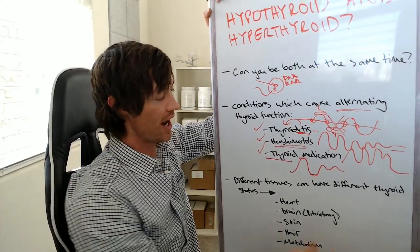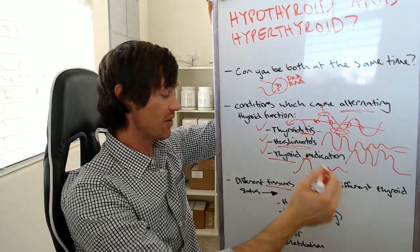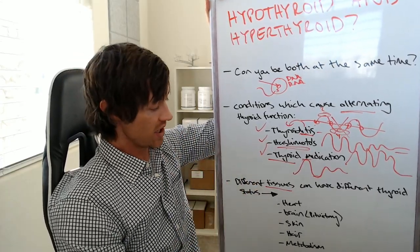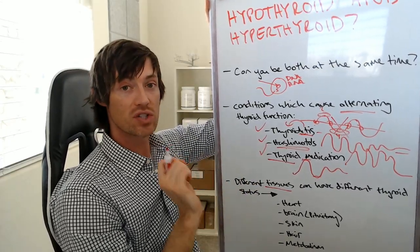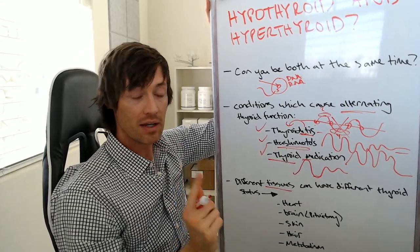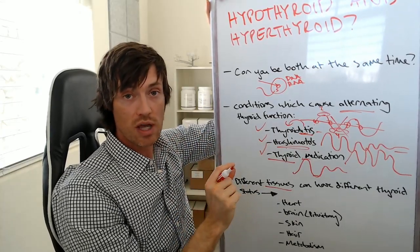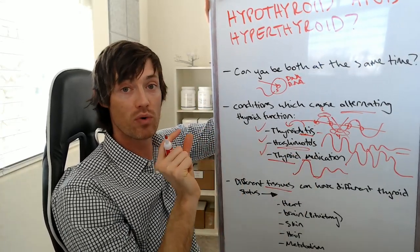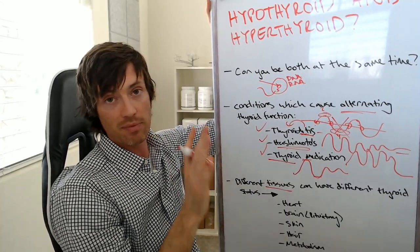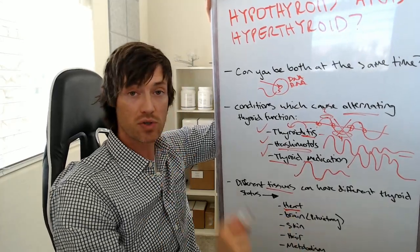That could be a potential explanation, but that isn't the only potential explanation. In fact, another one, and I would say this is probably more common is the fact that different tissues in your body can have different thyroid hormone status. Let me explain this so that it's easy to understand. Not every single tissue in your body is equally sensitive to thyroid hormone. Meaning if your body pumps out thyroid hormone, it will first reach certain tissues before reaching other tissues. And those tissues may have more resistance to the effect of the thyroid hormone.